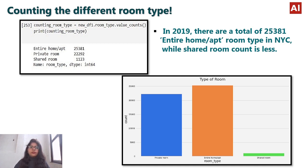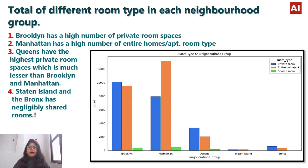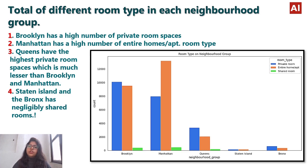Now let's look at the total of different room types in each neighborhood group. From this graph, Bronx has the highest number of private rooms, Manhattan has the highest number of entire home apartments, and Queens also has a high number of private rooms. Brooklyn has a higher number of private room spaces, while Staten Island and Bronx have negligible shared rooms. The demand for entire home apartments is largest in Manhattan.